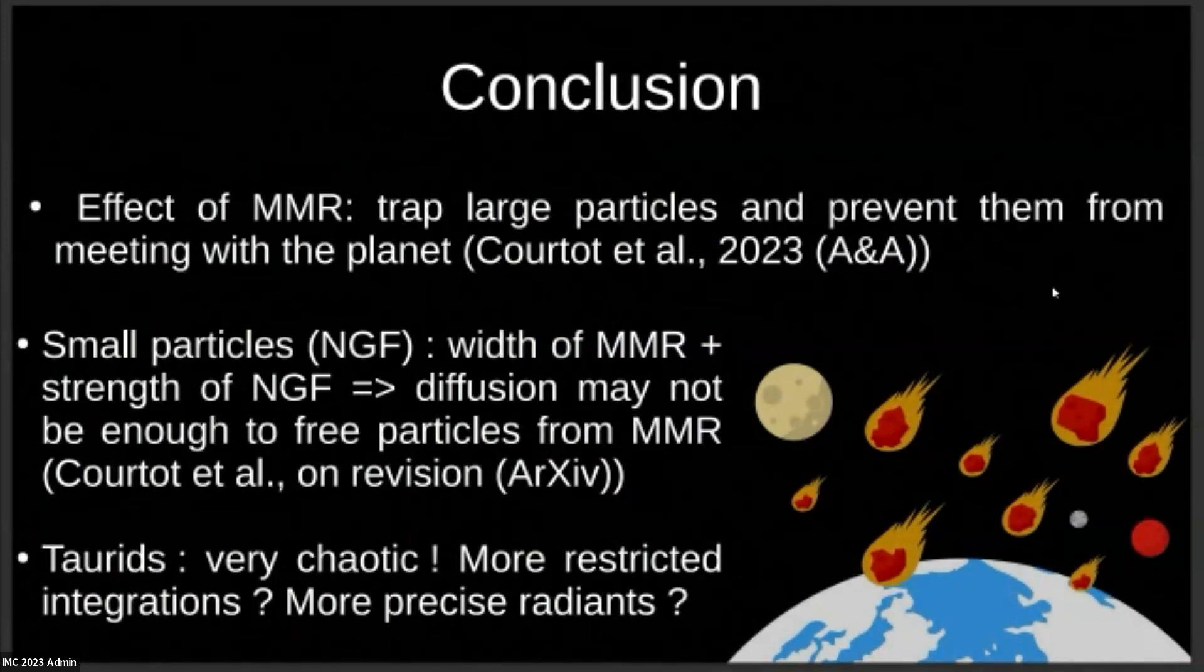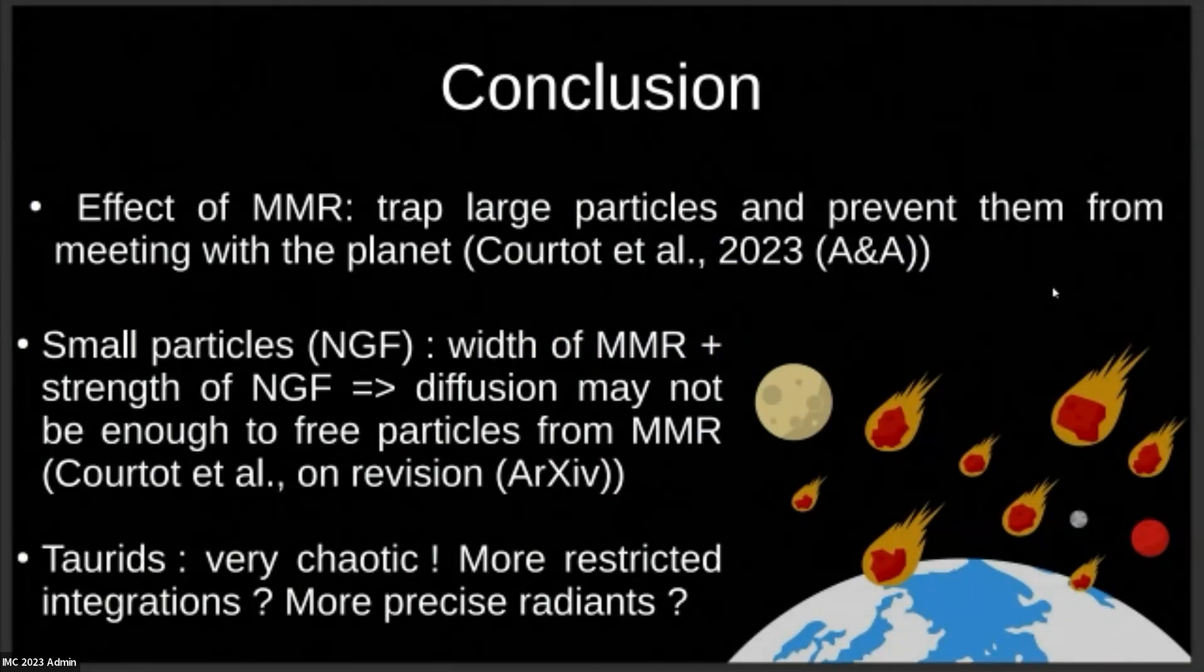I will finish by recapitulating the important points in my talk. First of all, I talked about the big mechanism I saw in chaos maps regarding Draconids and Leonids, but they're also true for the Geminids. We saw that the MMRs can trap large particles and prevent them from meeting with the planets that's at the origin of the MMR. For Draconids and Leonids, they can't meet Jupiter if they're inside MMRs with Jupiter. Then we also saw that Poynting-Robertson can make enough diffusion for particles to escape the MMR, but only if the MMR is thin enough and that Poynting-Robertson is strong enough, depending on the orbit of the particle.